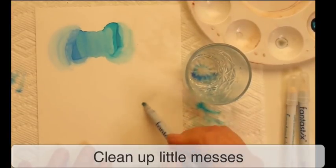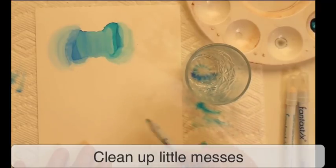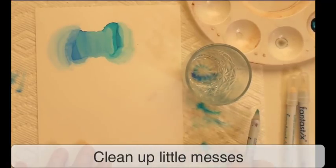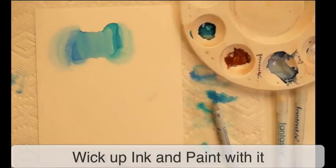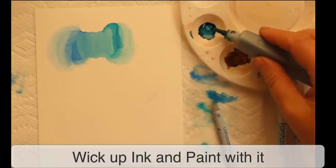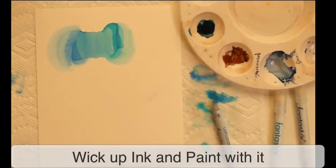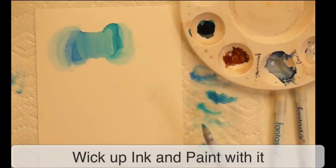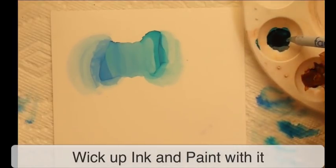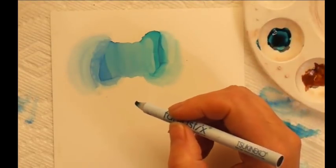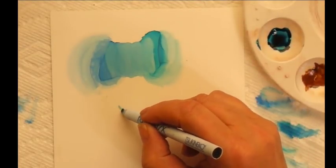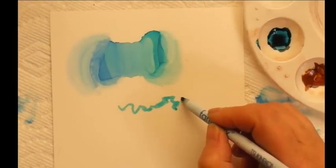Another thing you can do is actually wick up ink. Let's put a little bit of this Copic refill into the palette. If you set your Fantastix in it, you'll see it's wicking up the color. With that wicked up color, you can go ahead and paint with it.